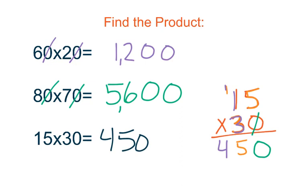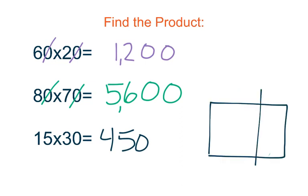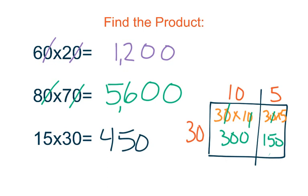If you were solving using the area model, you wouldn't split your rectangle into 4 pieces — you would only need to split it into 3. You would have 30 on one side, and then 10 and 5, and you would solve for each of those partial products. Then you would add your partial products of 300 plus 150, which gives you a total product of 450. So either way you solve it, you get the same product of 450.